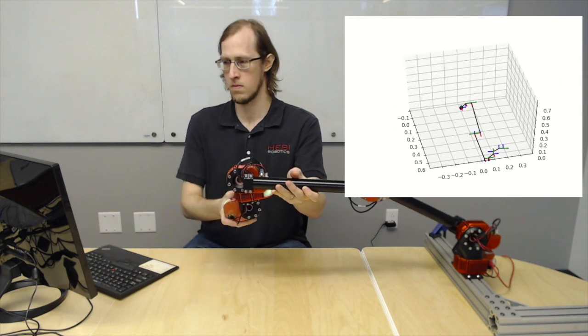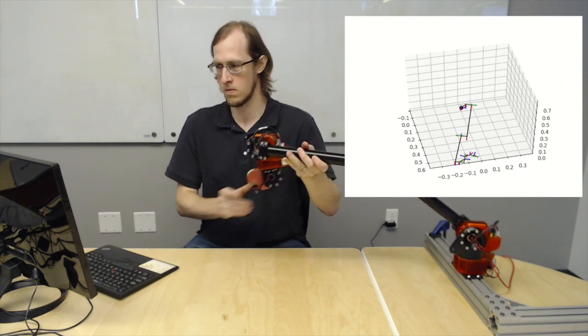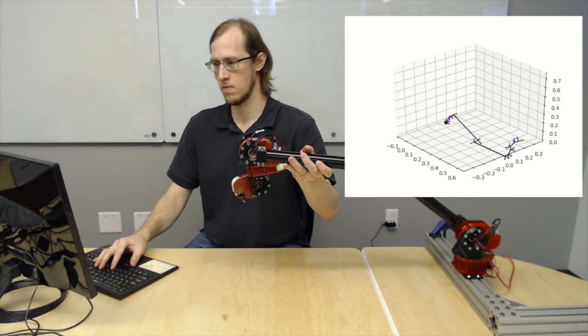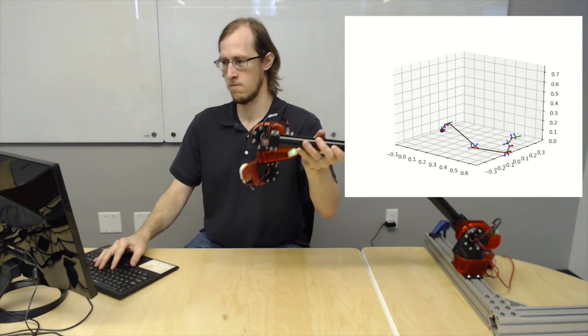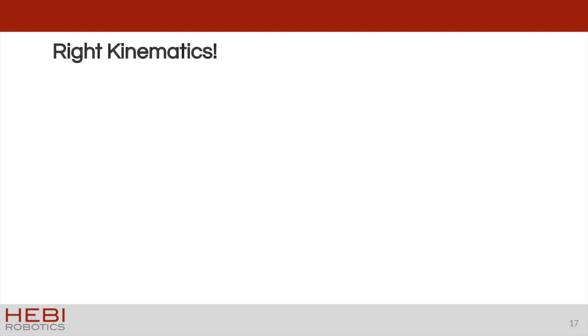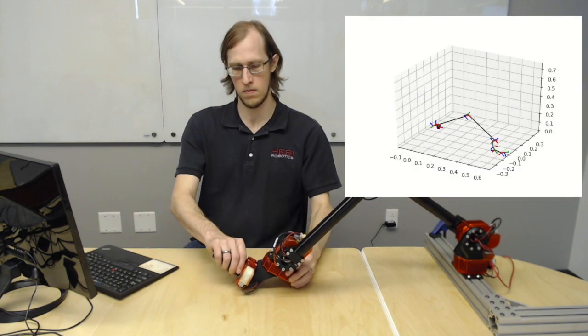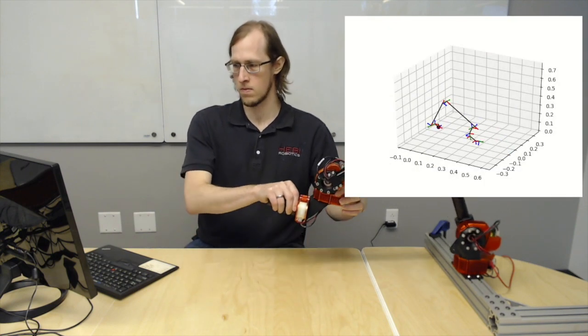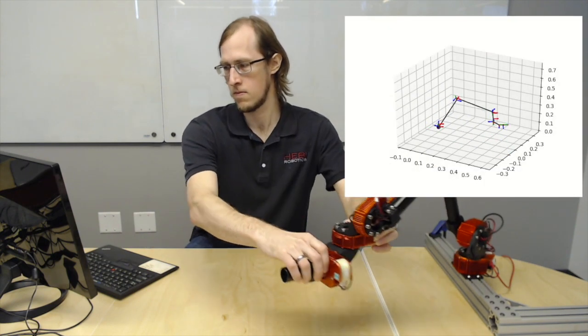So live visualization like this makes this process very quick. But even if you log data and plot after the fact, these differences can still be very clear. Now, after fixing the issues and rerunning the code here, visual confirmation verifies that the kinematic description does match the physical system.